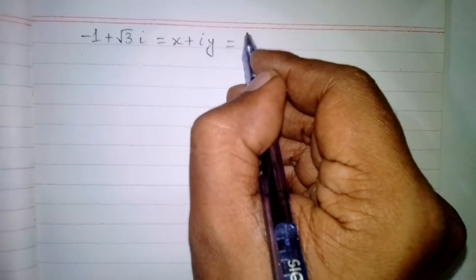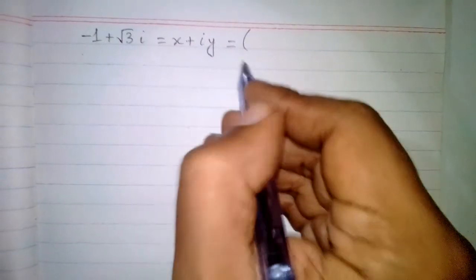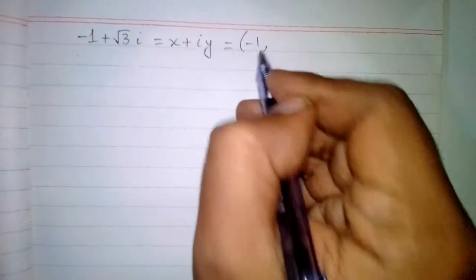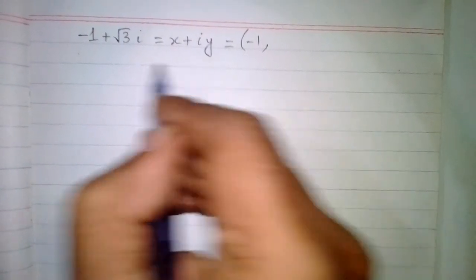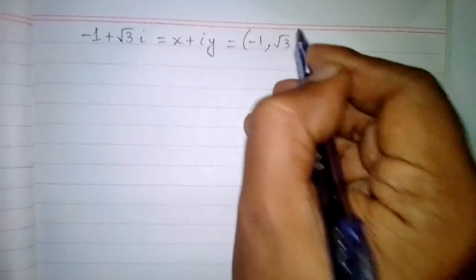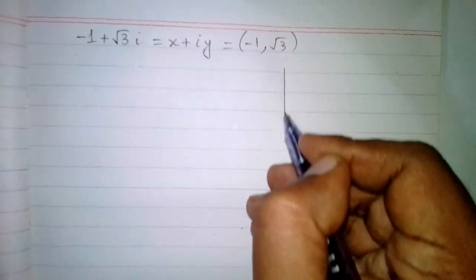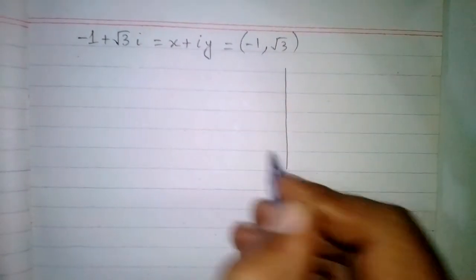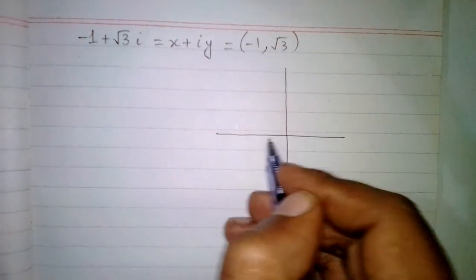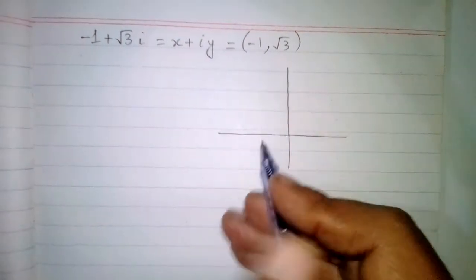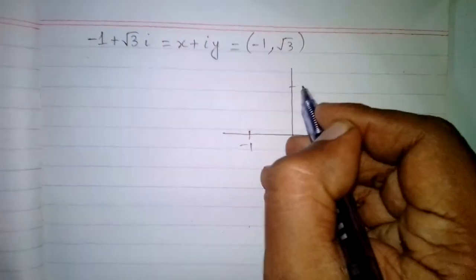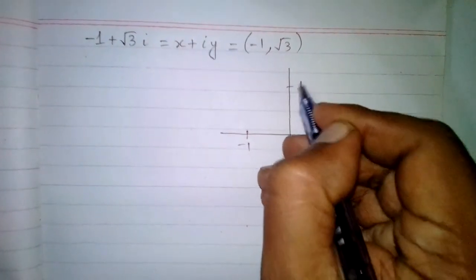This can be expressed as a point on the complex plane where the x component is the real part minus 1 and the y component is the imaginary part root 3. We can plot this point on the complex plane accordingly.